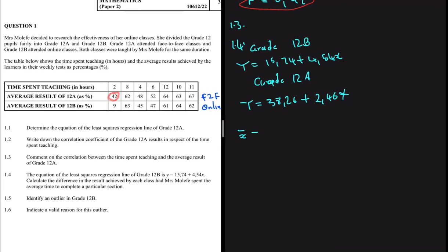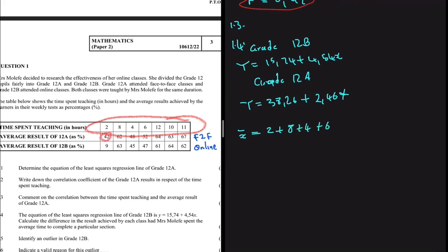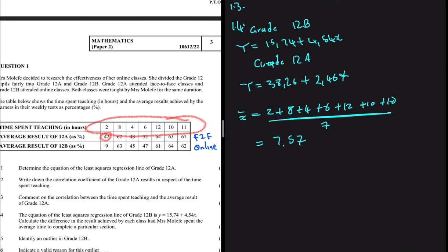To find the average time, we calculate x̄ using the time values: (2 + 8 + 4 + 6 + 12 + 10 + 11) ÷ 7 = 7.57. Now substitute this into the 12B equation: y = 15.74 + 4.54 × 7.57, which gives 50.1078.